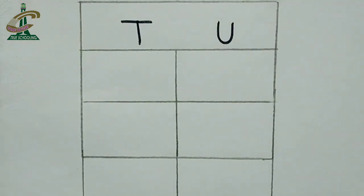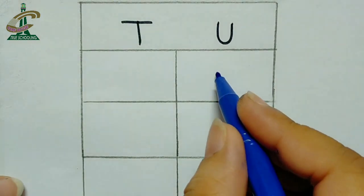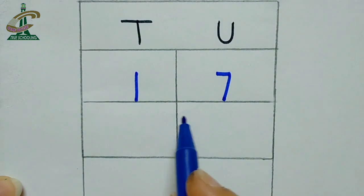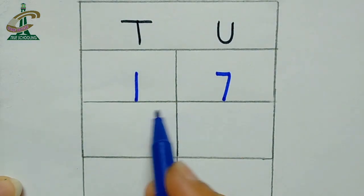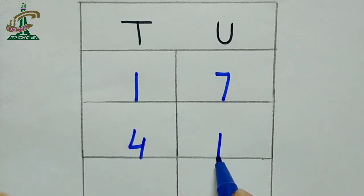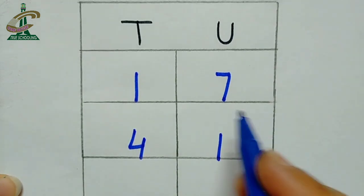I am explaining one more question. I am writing the number. The number is 17. Tell me students, which number is this? This is 17. And the next number is 41. Which number is this? This is 41. As I told you, how we can add them?